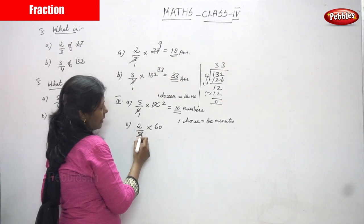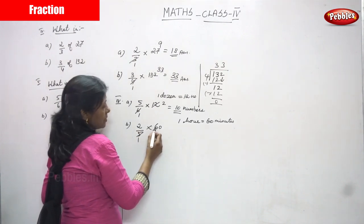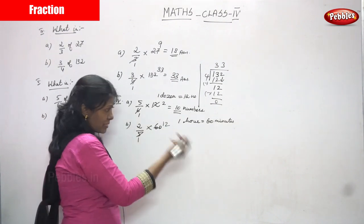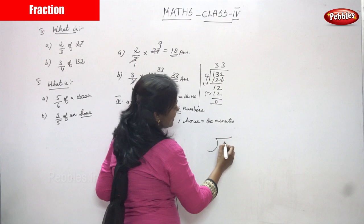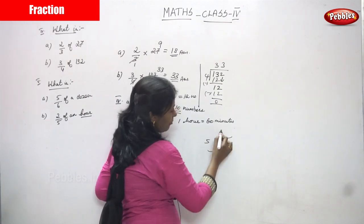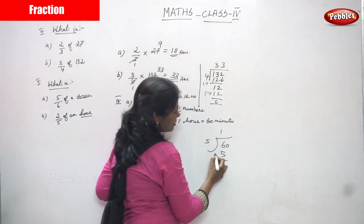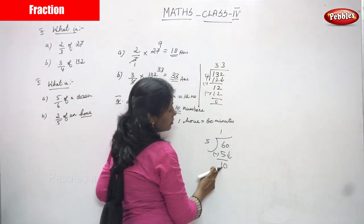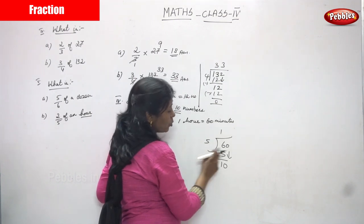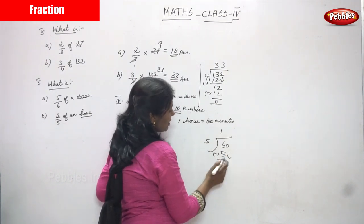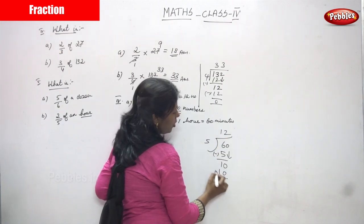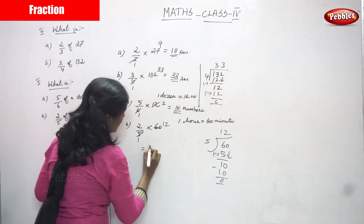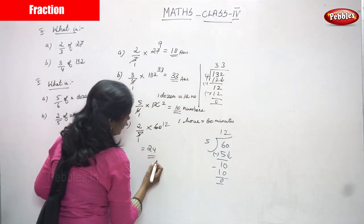So 5 is going to cancel with 60. 5 divided by 5 gives 1, and 60 divided by 5 — if you don't know, do the division: 1 five is 5, 6 minus 5 gives 1, bring down the 0 to get 10, 5 twos are 10, 10 minus 10 gives 0. So 60 divided by 5 equals 12. Then 2 into 12 gives 24. So the answer is 24 minutes.